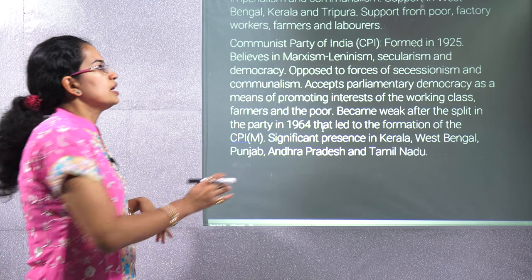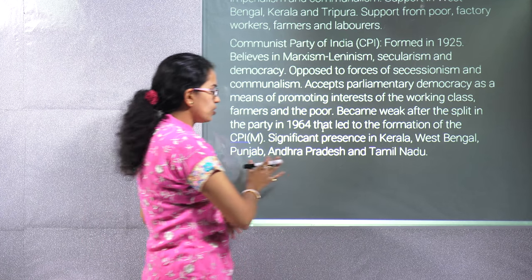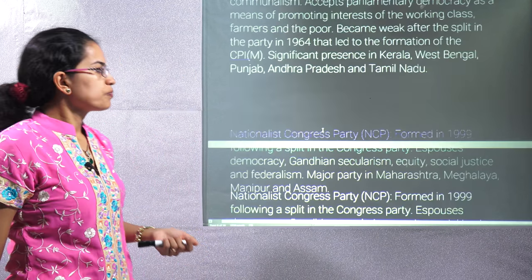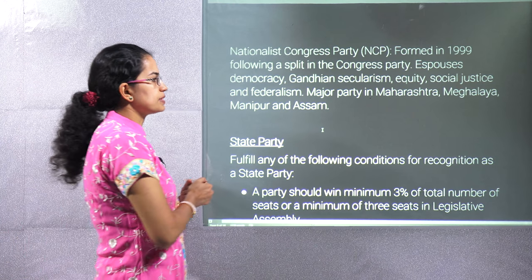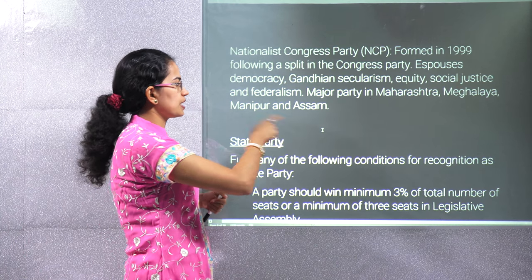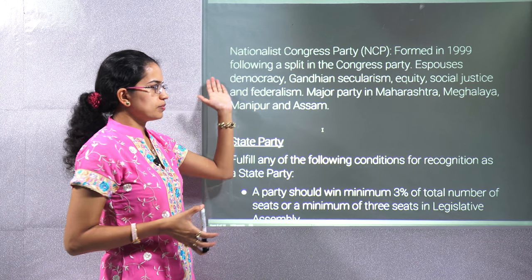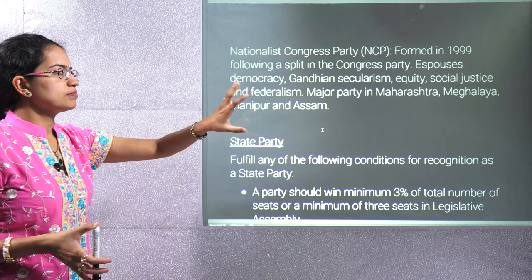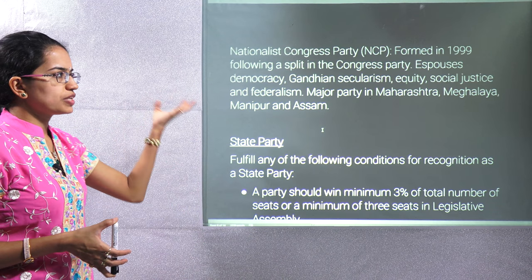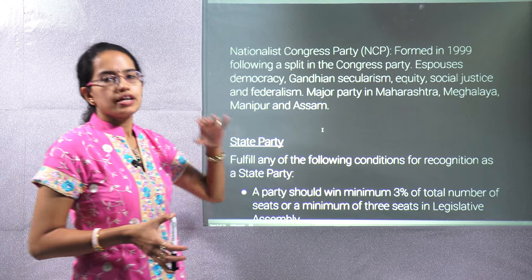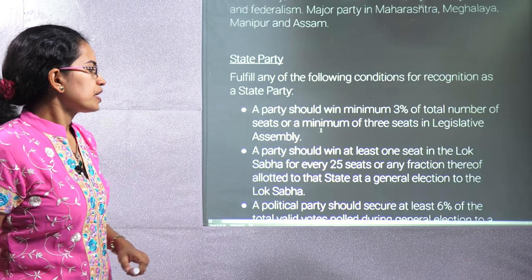The Communist Party of India (CPI), founded in 1925, is opposed to communism's divisive forces; it split into CPI(M) in 1964 and is mainly present in Kerala, West Bengal, Punjab, Andhra Pradesh, and Tamil Nadu. The Nationalist Congress Party, founded in 1999, is present in Maharashtra, Meghalaya, Manipur, and Assam, and believes in democracy, Gandhian secularism, social justice, and federalism.